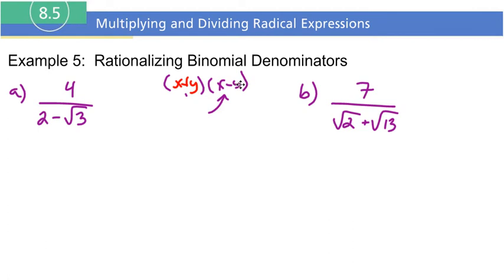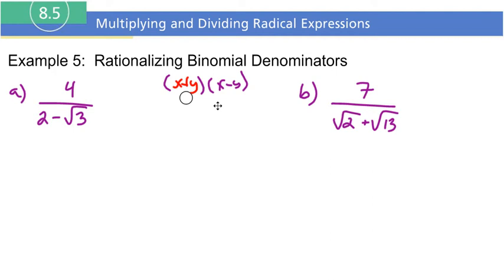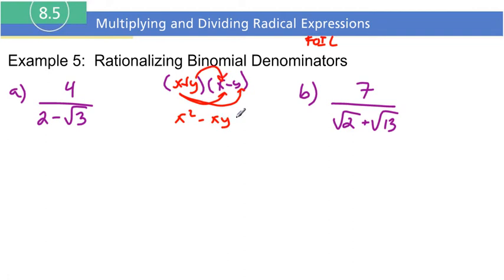The radical is going to disappear. Let's multiply this out using FOIL, because I want to show you a cool pattern that you'll be able to use to go a bit more quickly in your calculations. Using FOIL: x times x is x squared, x times negative y is negative xy, y times x is positive xy, and y times y is negative y squared. The negative xy and positive xy cancel out.